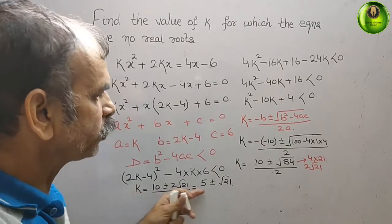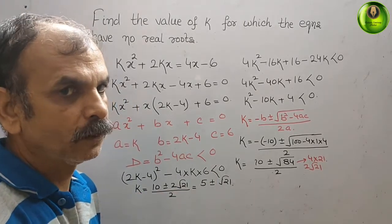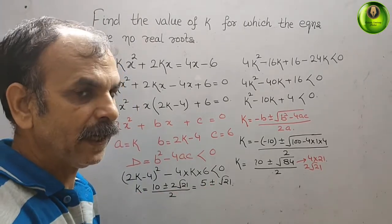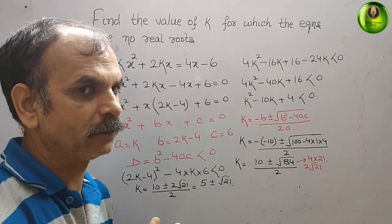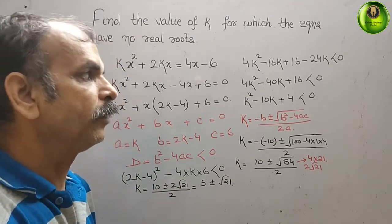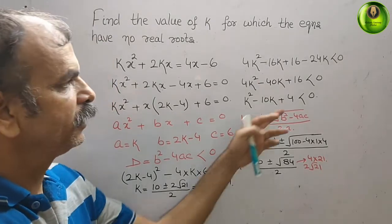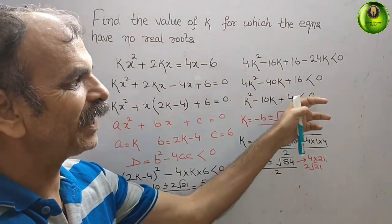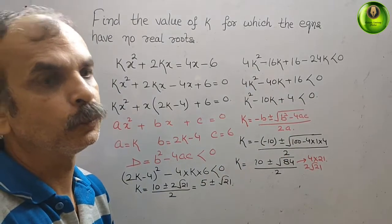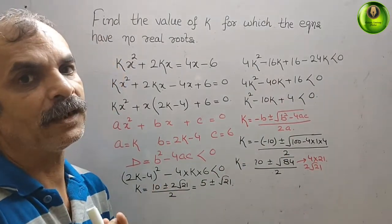So therefore the k values are two. One time we have to take plus, another time we have to take minus. But here what is that? See that here they have given you less than 0.